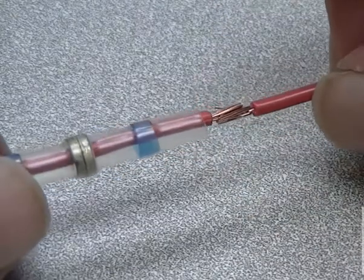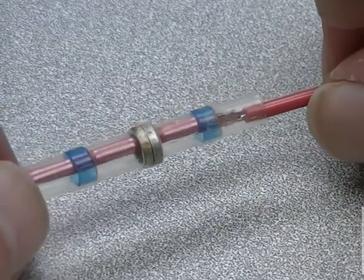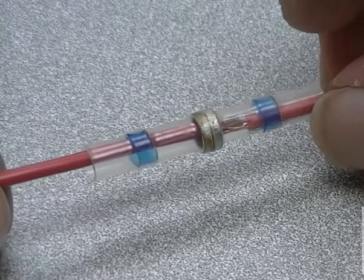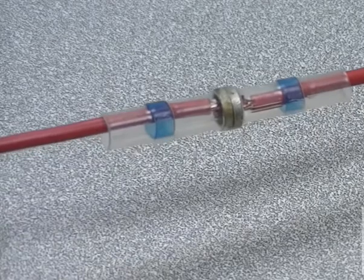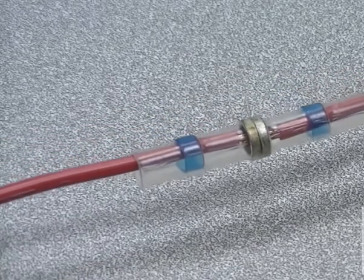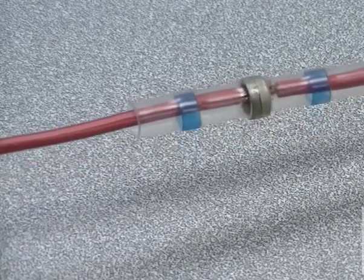Looking at the connector, you'll see two blue bands. Those are the heat activated adhesive seals. The gray bands you see in the middle are the low temperature solder rings. All of this is enclosed in a heat shrinkable tube.